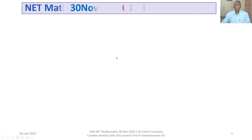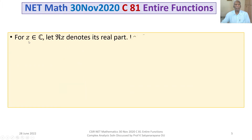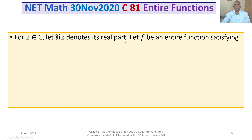The problem is: for Z belonging to C, the set of complex numbers, let Re(Z) denote its real part. Let F be an entire function satisfying |F(Z)| ≤ |Z| · |Re(Z)| on C, that is, this holds for all Z belonging to C.